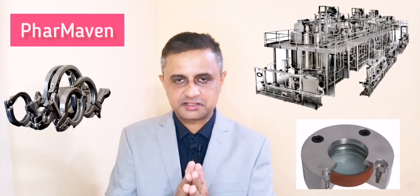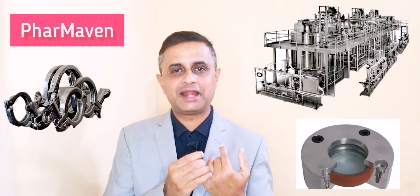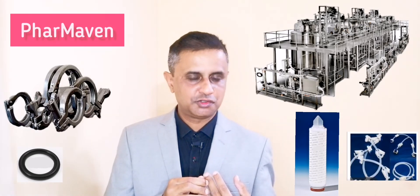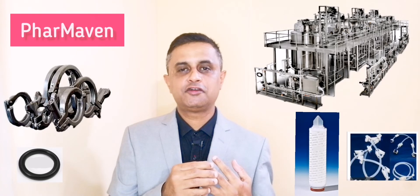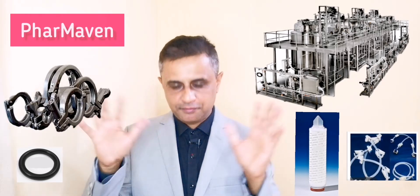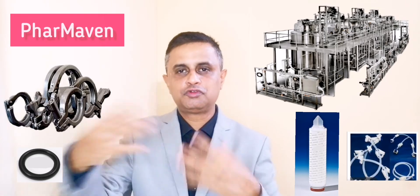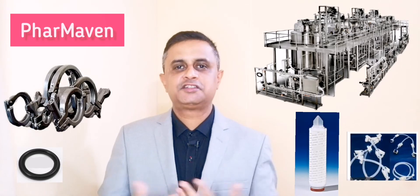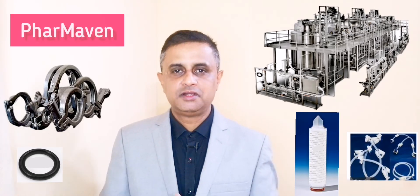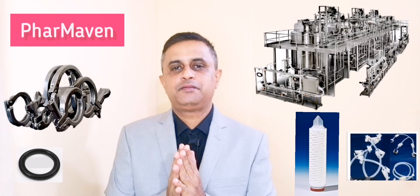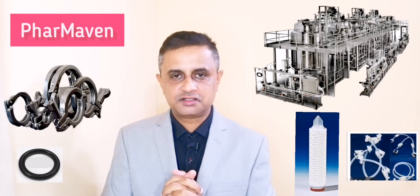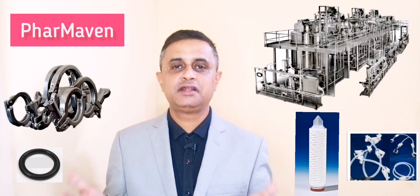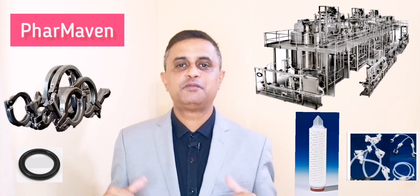Ensure that you have proper connections, proper gaskets, and all connections are checked. There should be no dead legs and no areas where proper steam penetration is not achieved — including your filters, connections, vent filters, connections to the filling line, and all drain points of your system. Ensure that each and every part of your system is reaching the required temperature. Only then proceed with the media fill. This is how to avoid media fill failure in a complex multi-vessel system.